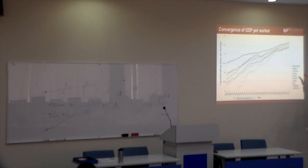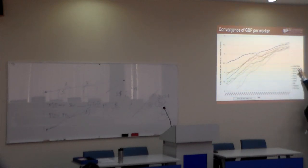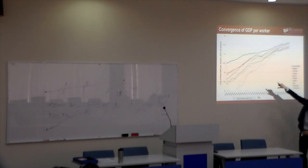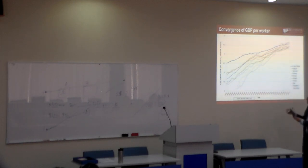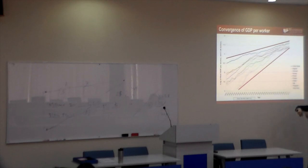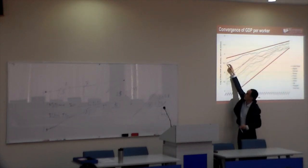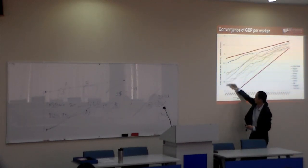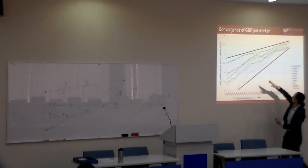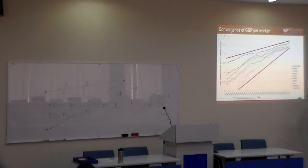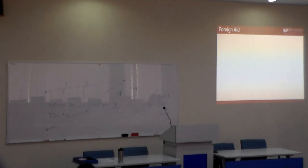I drew regression lines using Penn Tables data. Plotting initial GDP per capita against average growth for rich countries, you can see there is a tendency for convergence — these countries' economies were very different, but now they are converging. The regression result indicates this is indeed true.